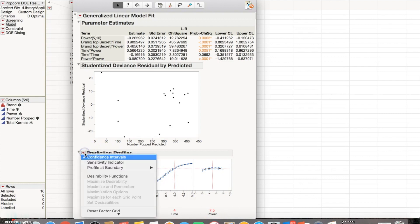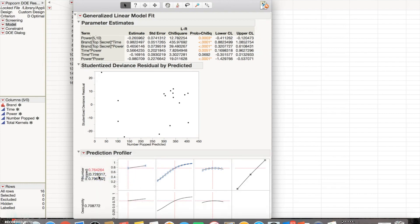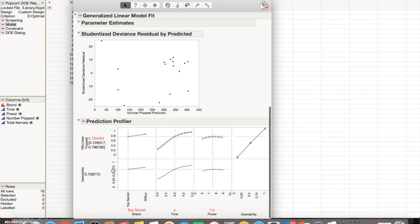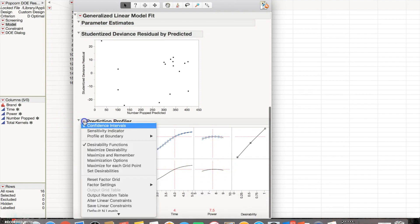But we want to look at the best option possible for this. So we're going to click desirability functions, and it opens it up a little bit more and gives us this desirability. But to go even deeper, we want to maximize our desirability.